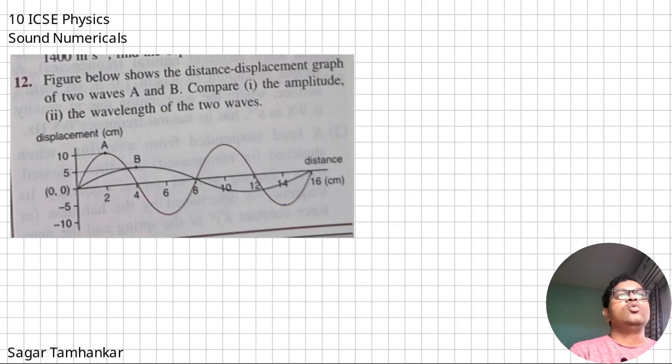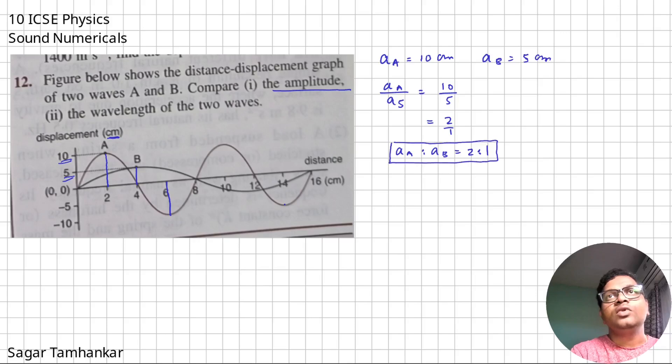This question is a visual one. Over here, there are two waves given A and B. And the first thing they are asking us to compare their amplitude. Now, from the mean position, the maximum displacement is called as the amplitude. So these are the amplitude for A, and here you can see that this is measured in centimeters. So therefore, amplitude of A is 10 centimeters, whereas that of B is equal to 5 centimeters. So here we have amplitude of A upon amplitude of B. That is 10 over 5, 2 upon 1. So this is 2 is to 1.